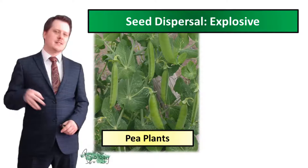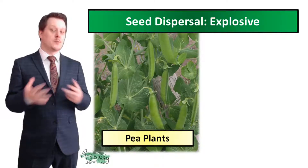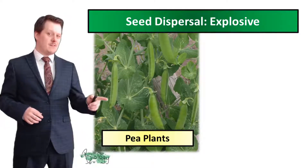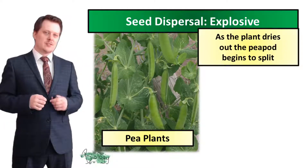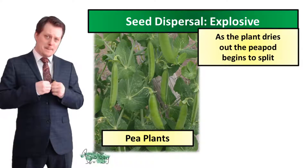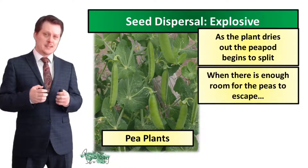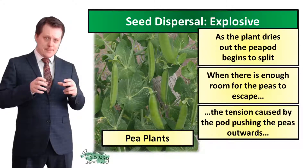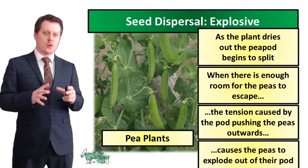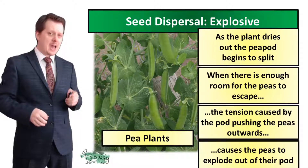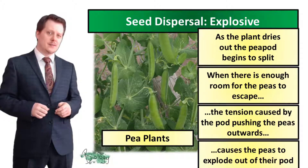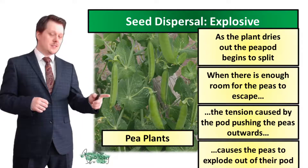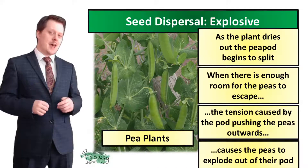Our third method of seed dispersal is explosive. These plants often have pods, and as the plant dries out the pod begins to split. When there's enough room for the peas to escape, the tension caused by the pod pushing the peas outwards will cause them to explode out of their pod. Because of that, the distance that these seeds will disperse is a lot less than other dispersal methods.